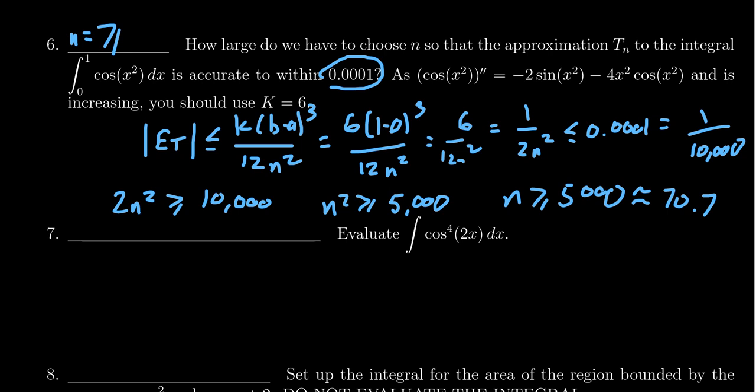A variation of this question could have a different function with different bounds, but that mostly changes how one would calculate K, which will be given to you. You do need to know the error bound for the midpoint rule and Simpson's rule as well. Another thing to be careful about with Simpson's rule is that once you found your number, like 70.7, you must have an even number, so you would round up to 72, not 71. That's what you want to watch out for on this question.